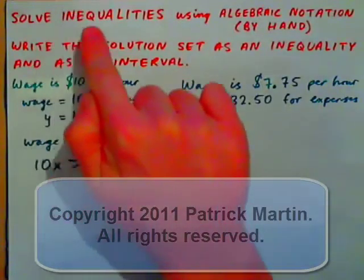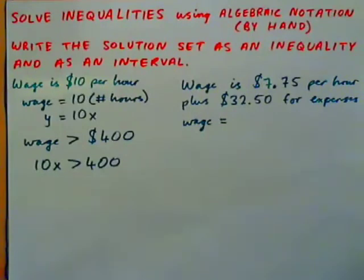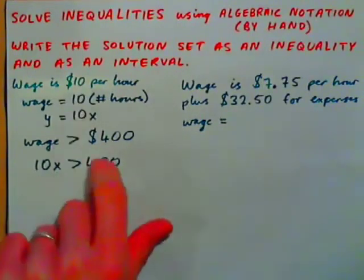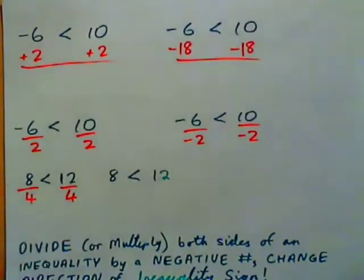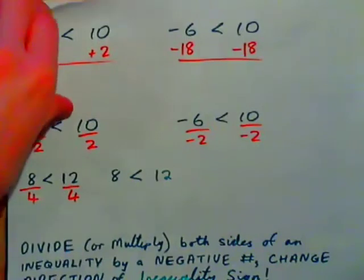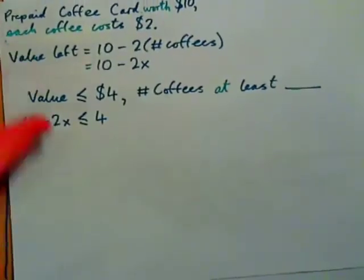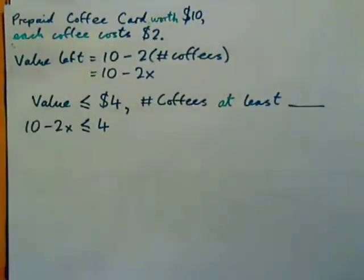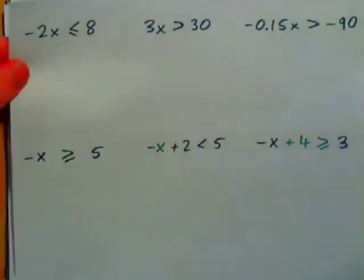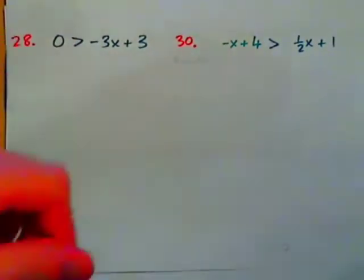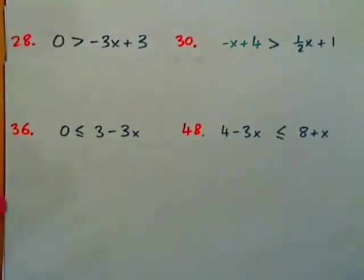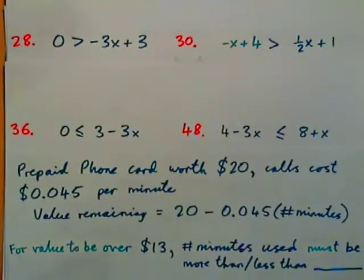In this video, we're going to look at solving inequalities using algebraic notation, or by hand. We'll have a couple of real-life examples. Then we're going to explore why, when we divide or multiply both sides by a negative, we need to change the direction of the inequality sign. We will also look at a real-life example to prove why that is the case, and do exercises 28, 30, 36, and 48 from the text, plus one more real-life example at the end.